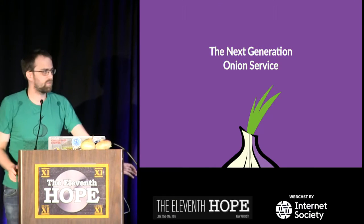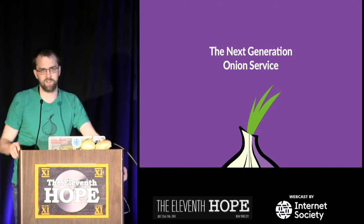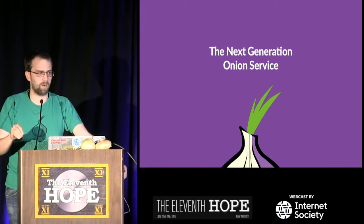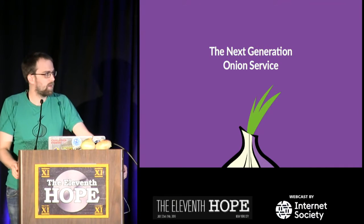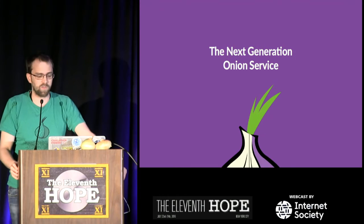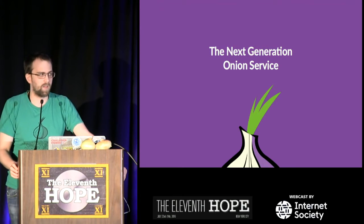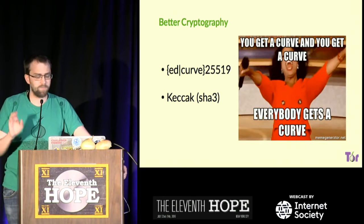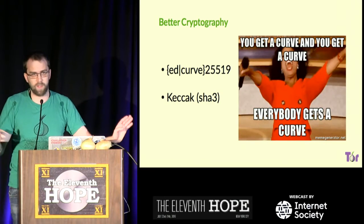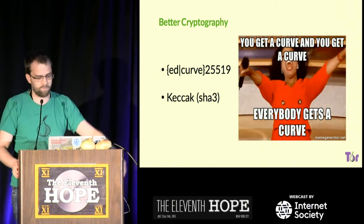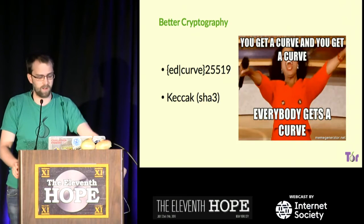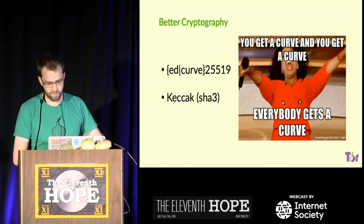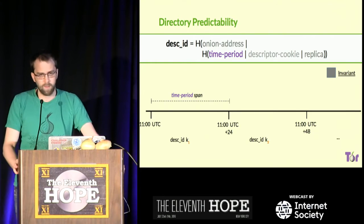Those attacks with the HSDir harvesting onion addresses and the guard discovery are huge problems. Next-generation onion services tries to address some of them — and it's not an easy thing. First of all, better cryptography: you get Curve25519 — everyone gets a curve — and we use SHA-3 as well. Great, amazing, better cryptography.